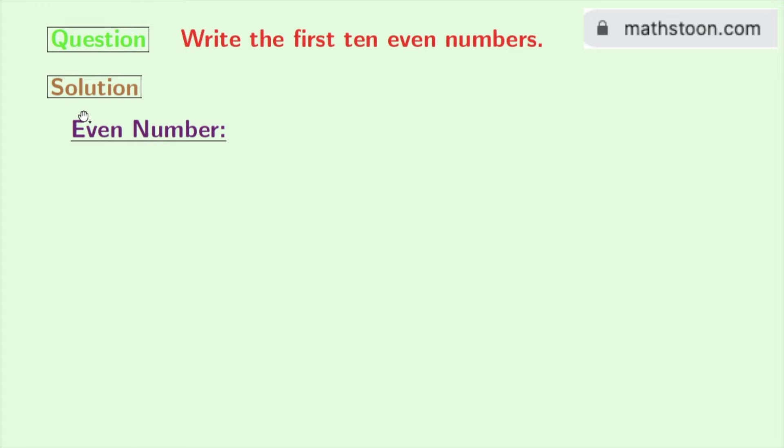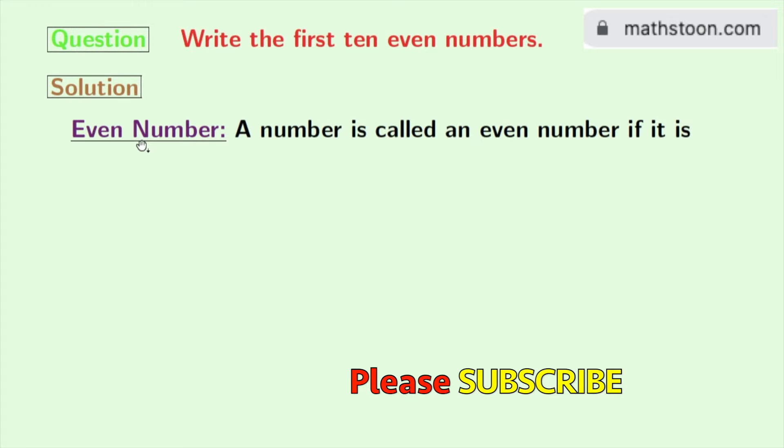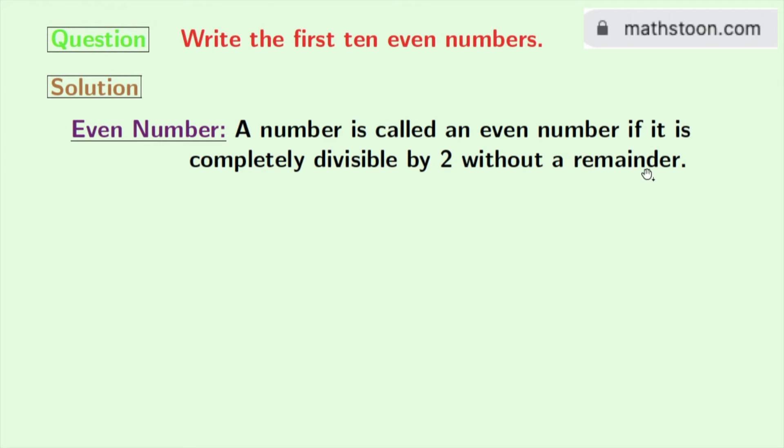Let us first learn the definition of an even number. A number is said to be an even number if that number is completely divisible by 2. That means when we divide that number, we will get 0 as a remainder.